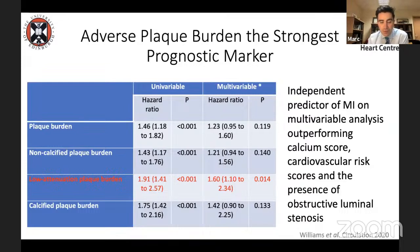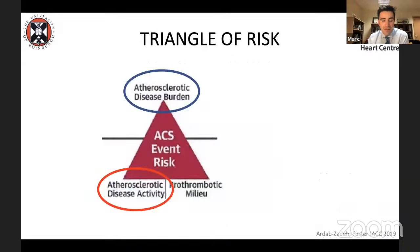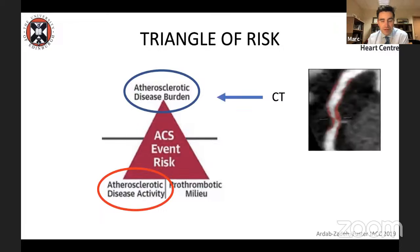We need more studies to tease that out, and data from the ICONIC trial was certainly supportive. I would argue we're actually pretty good at measuring atherosclerotic disease burden. Now, what about the second corner of the triangle — atherosclerotic disease activity?